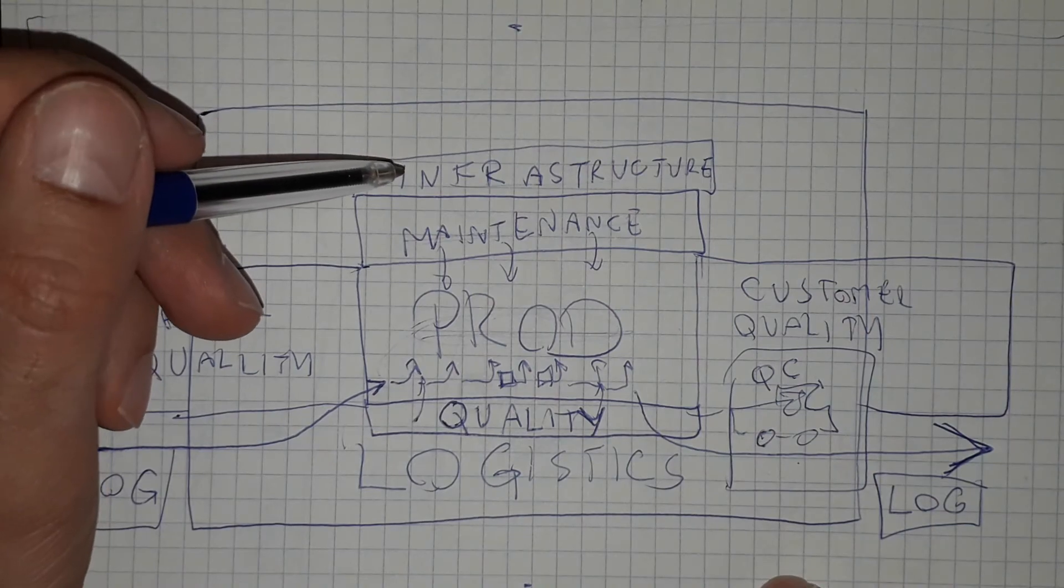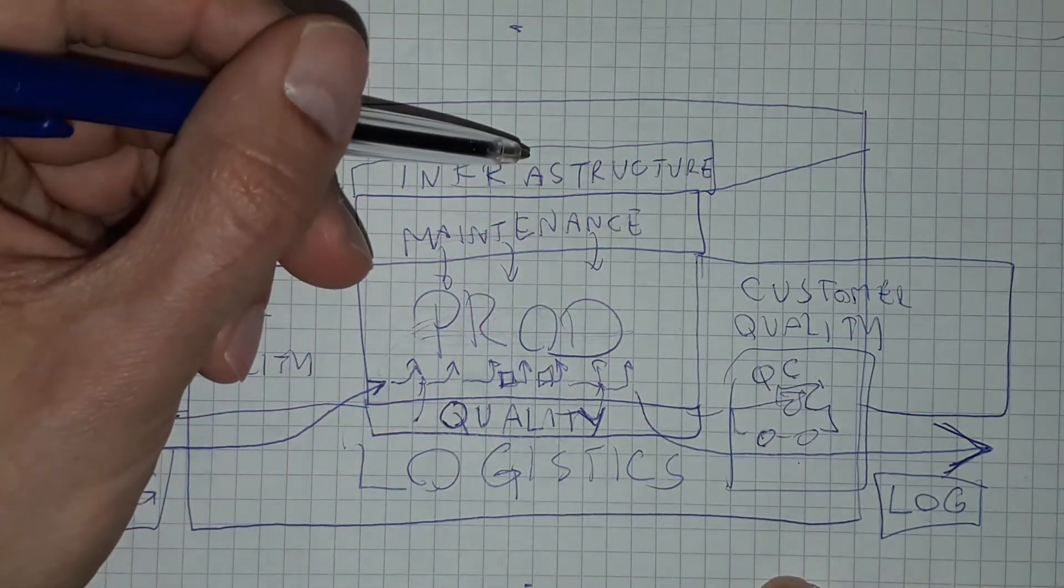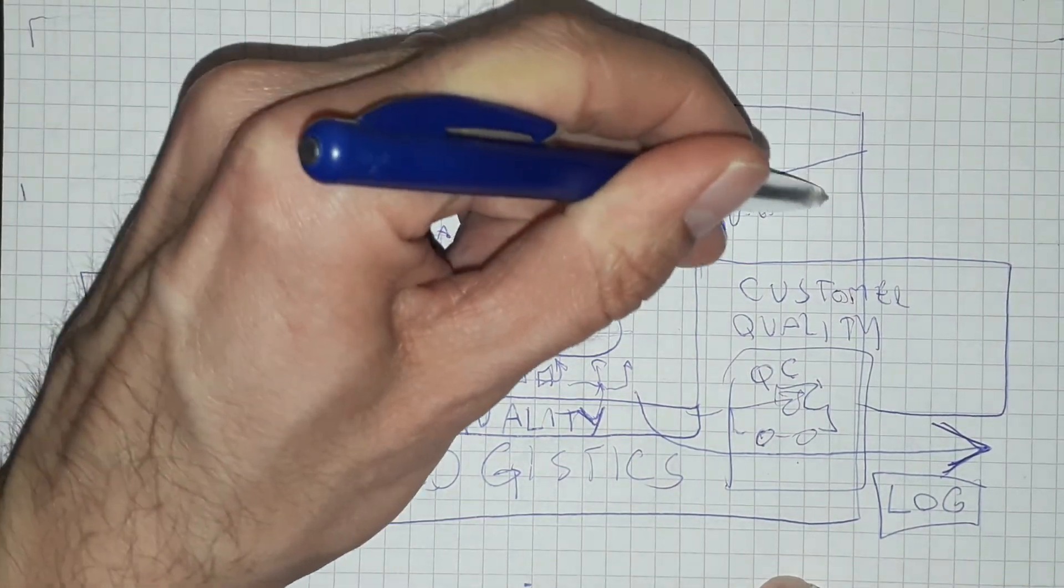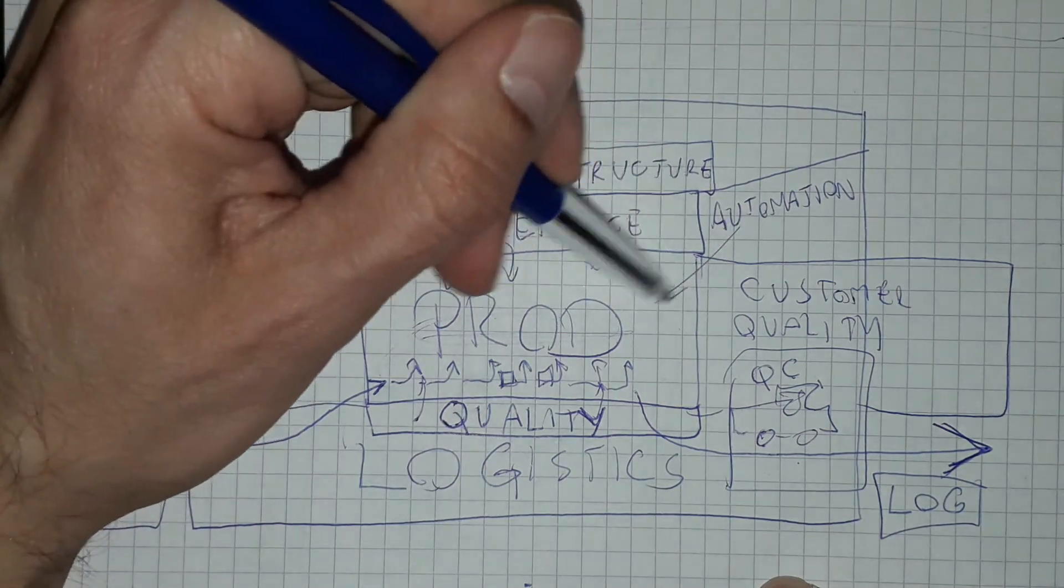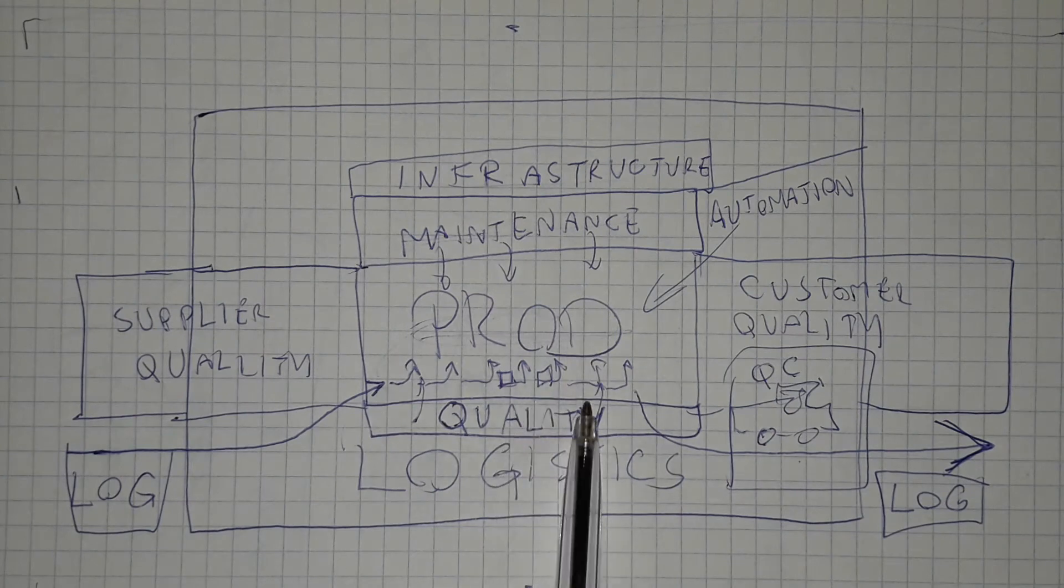Then we have of course some other services or engineering services, for example automation, robotics, workshops, and so on. This is closely connected to the production lines.